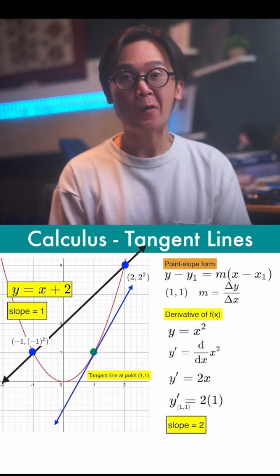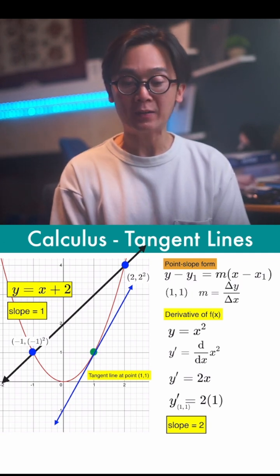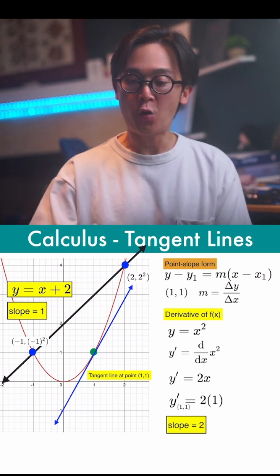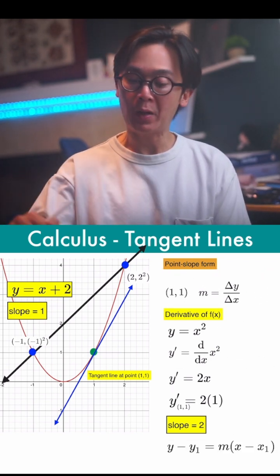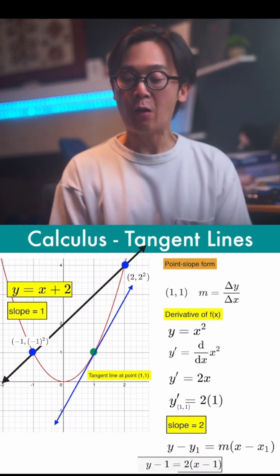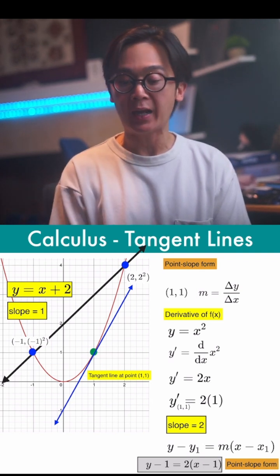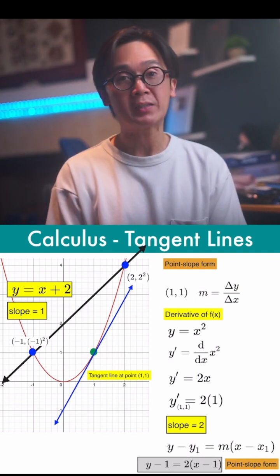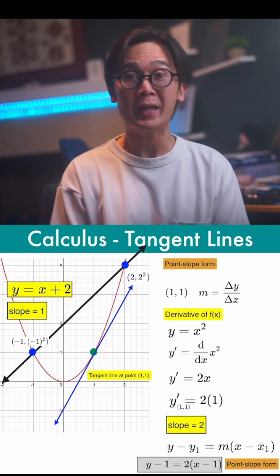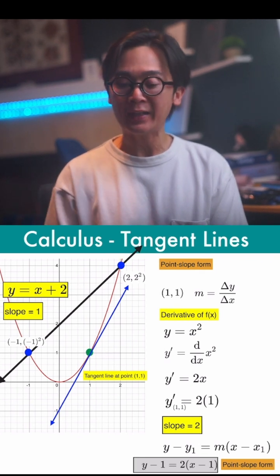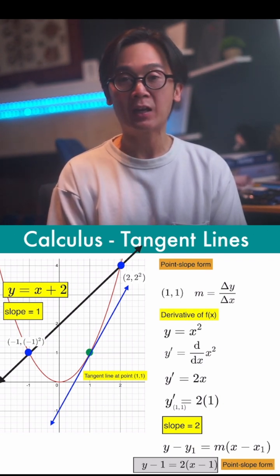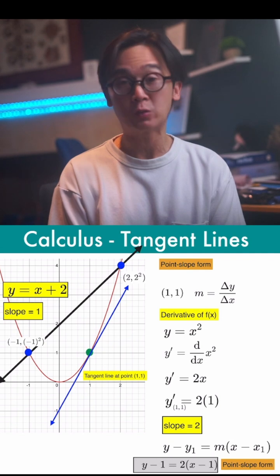Now that we have the slope of our tangent line, which is 2, and we also have the point 1 and 1, we can use the point-slope form to write the equation of the line. By plugging in the point 1 and 1 with a slope of 2, our point-slope form is y minus 1 equals 2 times x minus 1. If we want to convert this into slope-intercept form, we solve for y and we'll generate the equation of our tangent line as y is equal to 2x plus 1.